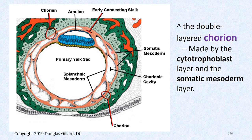Here's what the chorion looks like — the chorionic cavity hasn't fully formed yet but you can see the somatic mesoderm forming alongside the cytotrophoblast layer in light green. Those two layers together make the chorion. The dark green tissue is the syncytiotrophoblast — that weird cancer-like tissue that pulled the blastocyst into the endometrium.